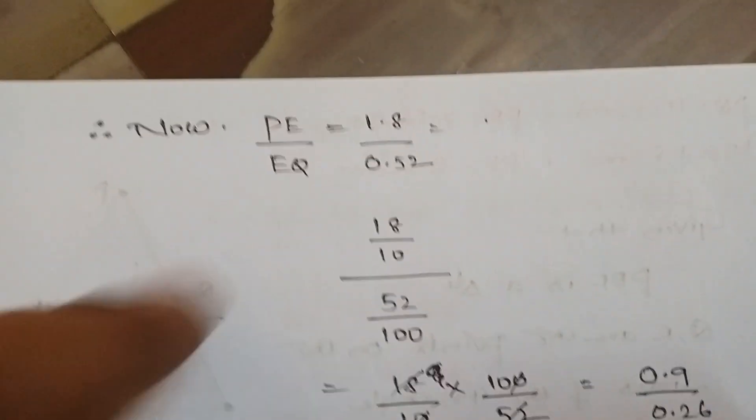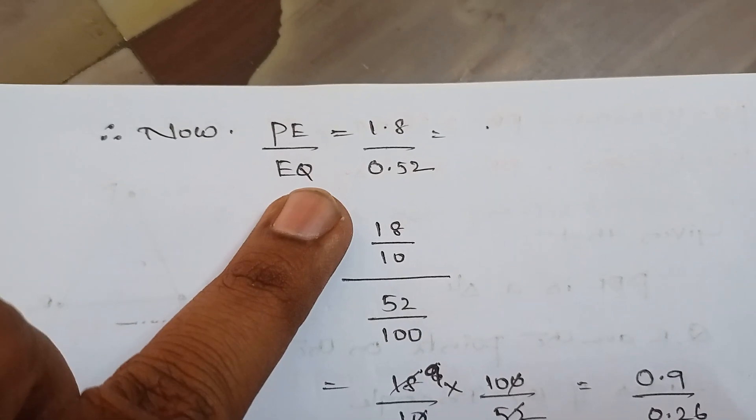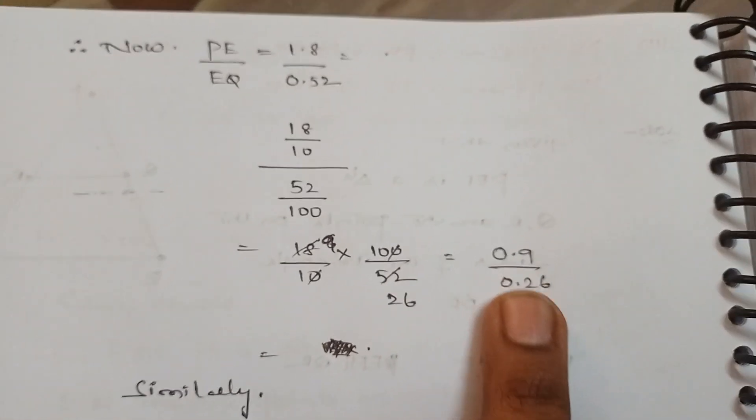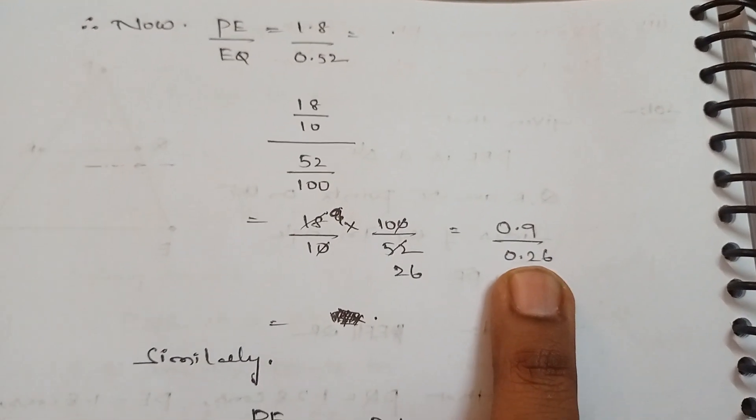Now substitute the values. PE by EQ, okay, that is 1.8 by 0.52. We get 0.9 by 0.26, again after simplifying.